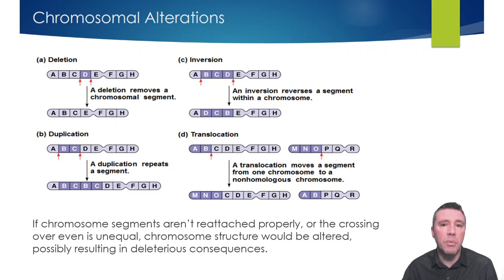Deletions and duplications are errors in which regions of a chromosome are removed entirely or contain a repeated segment, respectively.